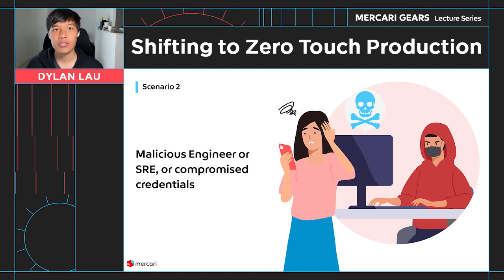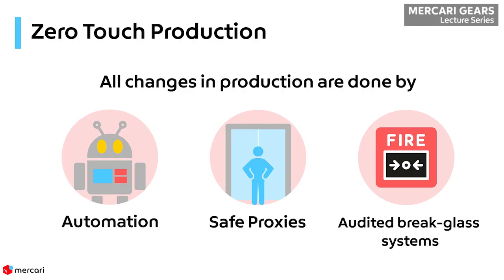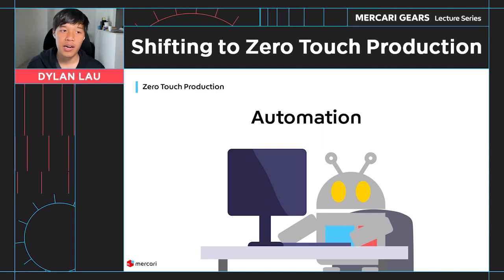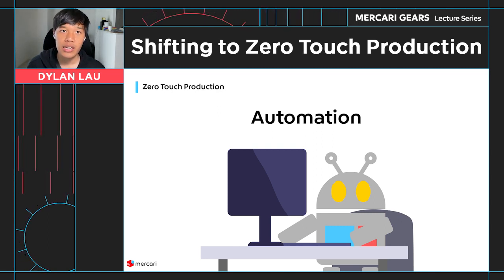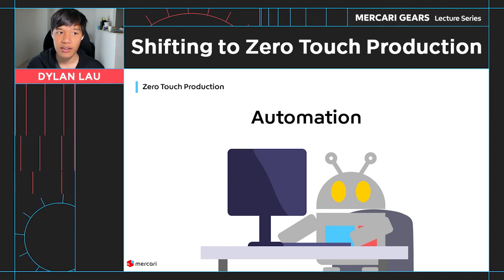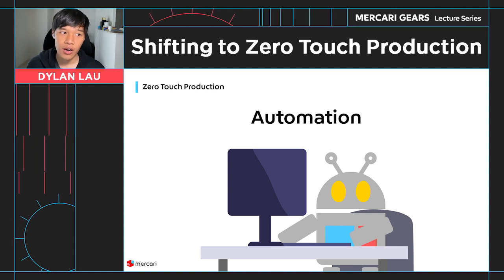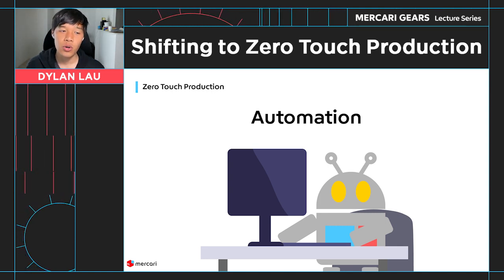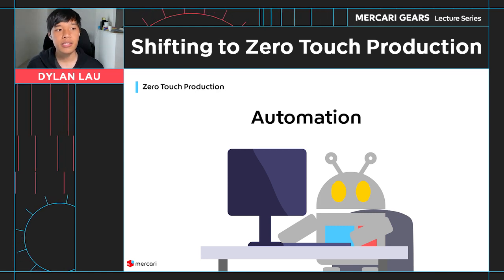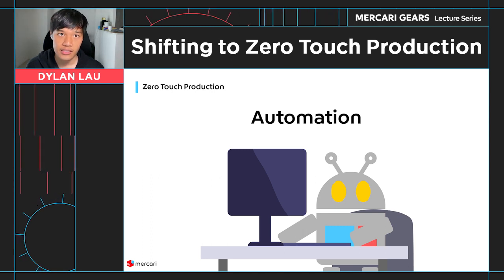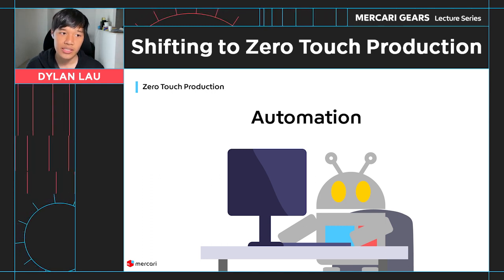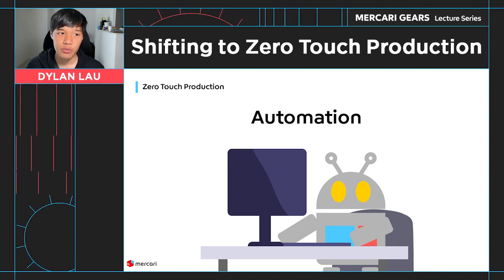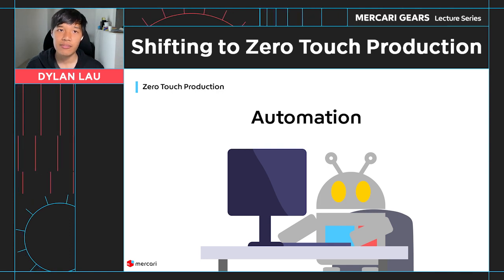These are two types of scenarios that zero-touch production aims to solve. Zero-touch production is a concept where all changes in production are done by automation, safe proxies, or an audited break glass system. With automation, all production changes are done by a system which is granted the least required privileges so that it is not capable of doing anything harmful. The system's code can be validated for auditing, and the permissions are limited to only what is required. This automation system can only manage a small subset of production assets, but it will cover the majority of production operations that a user would need to do and can do it on behalf of that user.